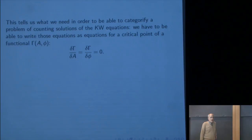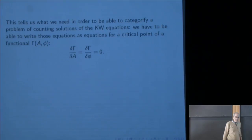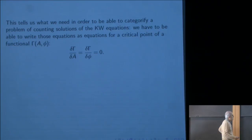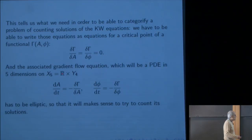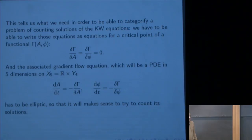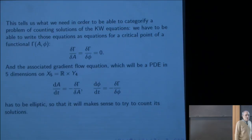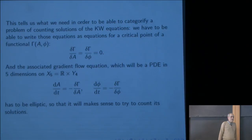To categorify a problem of counting solutions of the KW equations, we have to be able to write these equations as equations for a critical point of some functional Γ(A, φ). The KW equations should be the Euler-Lagrange equations for some functional Γ. If so, you formally would have a framework for categorification, though you'd have to worry about compactness issues. The second hurdle is that the associated gradient flow equation, a PDE in five dimensions on R × Y^4, has to be elliptic. A generic Γ won't work — only special ones do.